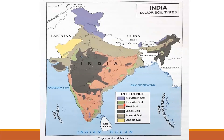Red soil is shown in red color. Red soil is found in Karnataka, Kerala, Tamil Nadu, Andhra Pradesh, Telangana, Odisha, Chhattisgarh, Jharkhand, some parts of Madhya Pradesh, and Maharashtra.